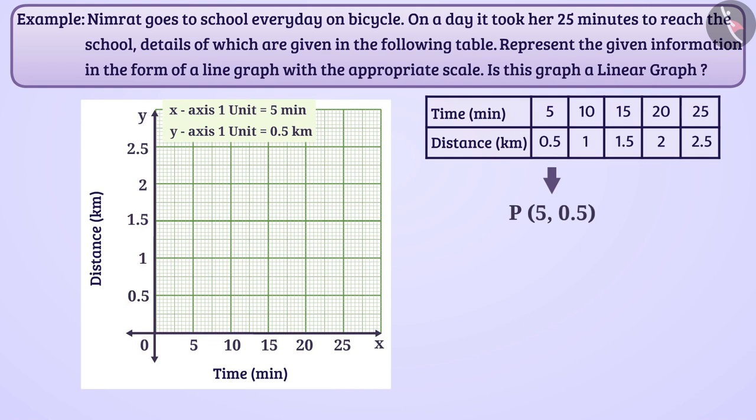To show this on the graph, we move 1 unit to the right from the original point. Then, 1 unit will move upward. This will bring us to the point P.